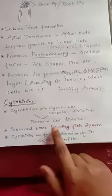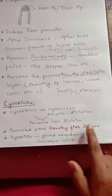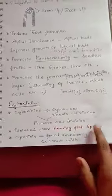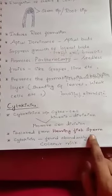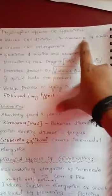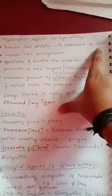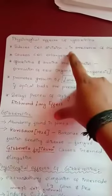Cytokinins were first isolated from herring sperm. They were first identified there and then found abundantly in coconut milk. The physiological effects of cytokinins include inducing cell division, which occurs in the presence of auxins.